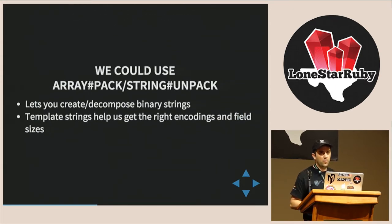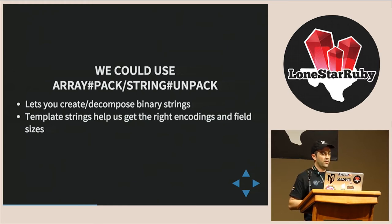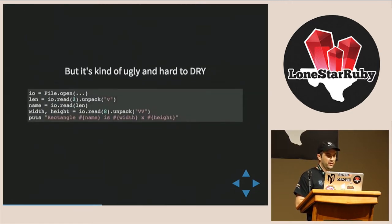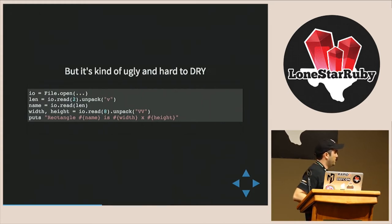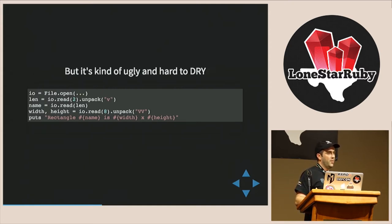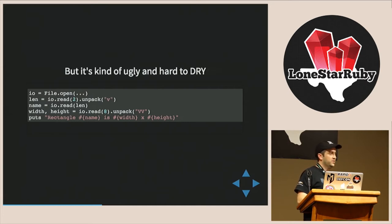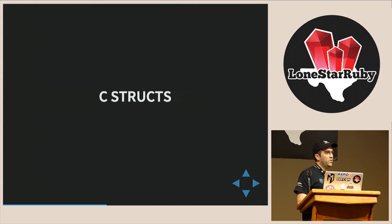We need very fine-grained control over what's actually going out on the wire, so effectively what we need is a binary string. You can make and read binary strings in Ruby using Array#pack and String#unpack, which are mirror images of each other. You open a file, read some bytes, unpack with a certain encoding, and get semantic meaning — name, width, height — representing, say, a rectangle. But this isn't something you could build a client on top of very easily. It's completely imperative, ugly, hard to avoid repeating yourself, and everything is hard-coded — the byte offsets, the encoding type.